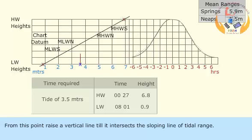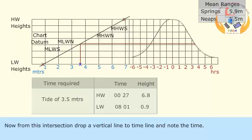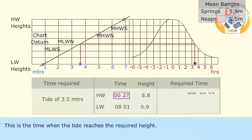From this point, raise a vertical line till it intersects the sloping line of tidal range. From this intersection, draw a horizontal line to intersect the tidal graph at the required side. Now from this intersection, drop a vertical line to the timeline and note the time. This is the time when the tide reaches the required height.